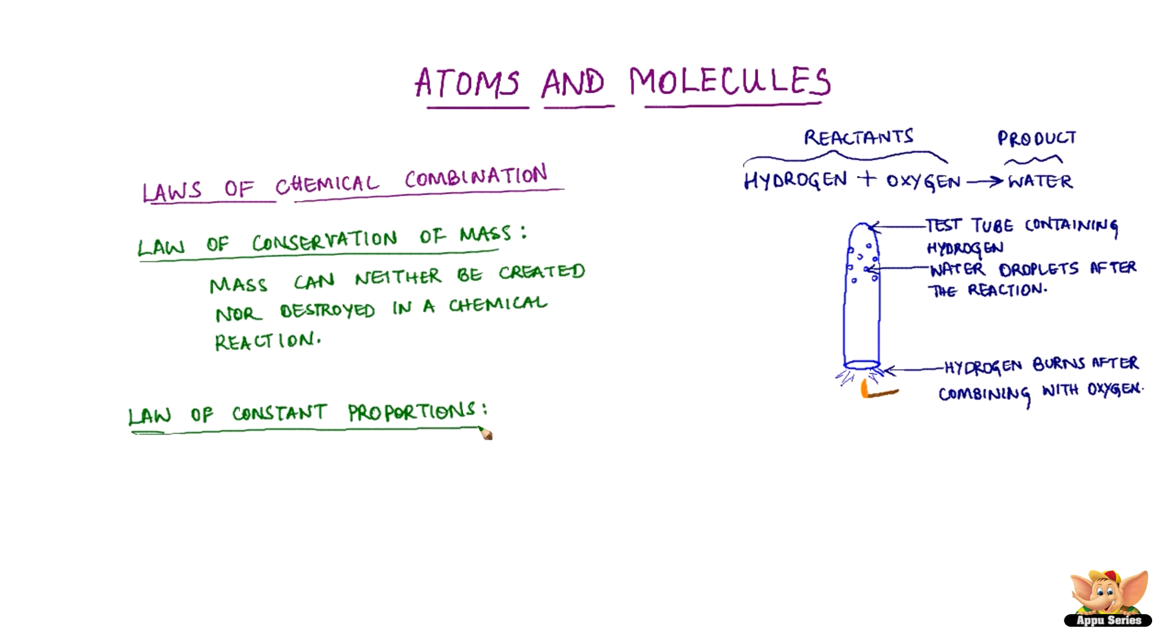The law of constant proportion states that in a chemical substance, the elements are always present in definite proportions by mass. This law is also known as the law of definite proportions.